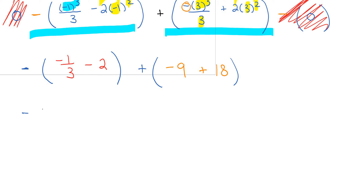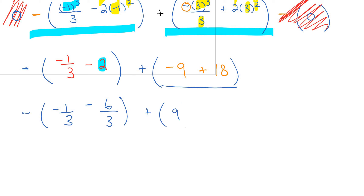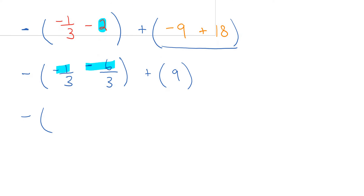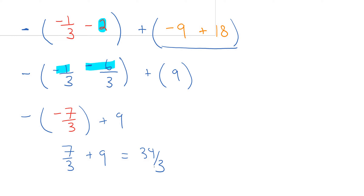Finishing the calculations: negative 1/3 minus 6/3 is −7/3, and with the outer minus sign that becomes positive 7/3. Then plus 9. So 7/3 + 9 = 7/3 + 27/3 = 34/3. That's the final answer. Always set up your integrals by looking at the graph carefully, identifying Case 1 and Case 2, and then execute the antiderivative and evaluate the numbers.